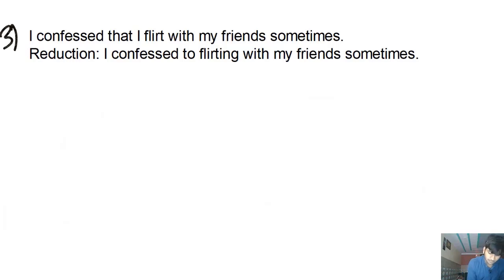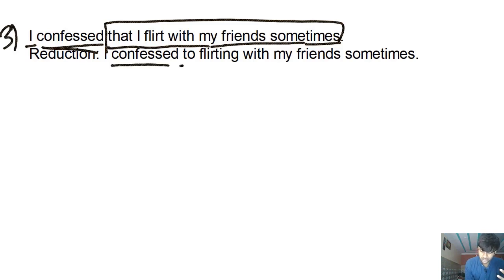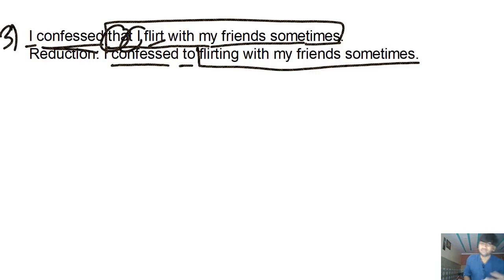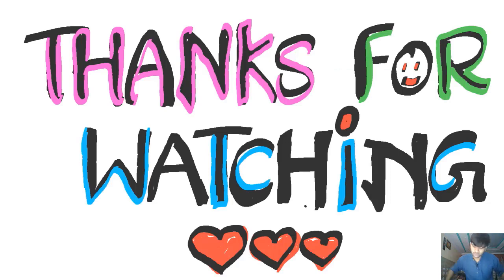If the subject is doing the action, the gerund phrase is in the active voice. If the subject is receiving the action, the gerund phrase is in the passive form. Example three: 'I confessed that I flirt with my friends sometimes.' With the verb 'confess,' we use 'confess to' + gerund: 'I confessed to flirting with my friends sometimes.' This is how you reduce a noun clause to a gerund phrase.